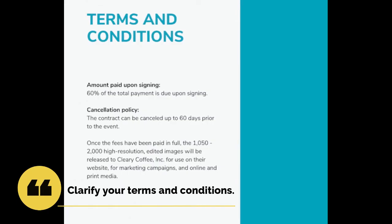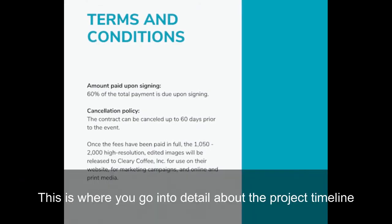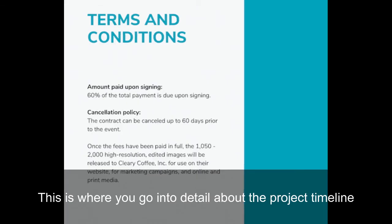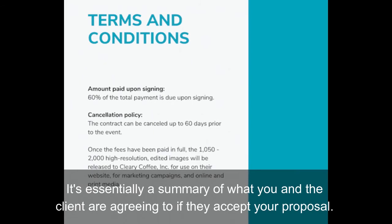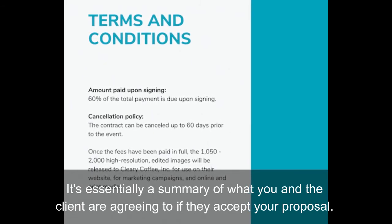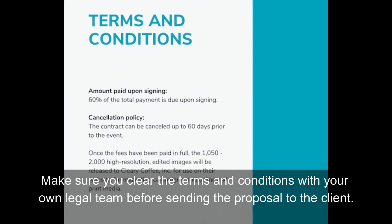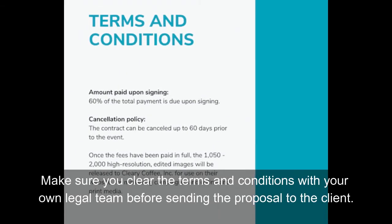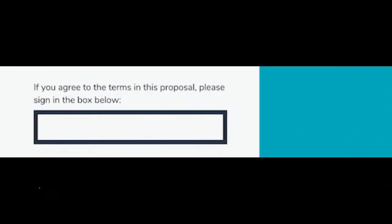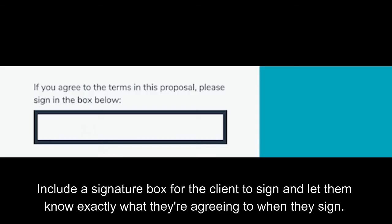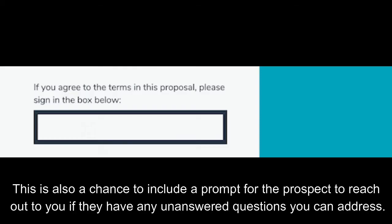Clarify your terms and conditions. This is where you go into detail about the project timeline, pricing, and payment schedules. It's essentially a summary of what you and the client are agreeing to if they accept your proposal. Make sure you clear the terms and conditions with your own legal team before sending the proposal to the client. Include a space for signatures to document agreement. Include a signature box for the client to sign and let them know exactly what they're agreeing to when they sign. This is also a chance to include a prompt for the prospect to reach out to you if they have any unanswered questions you can address.